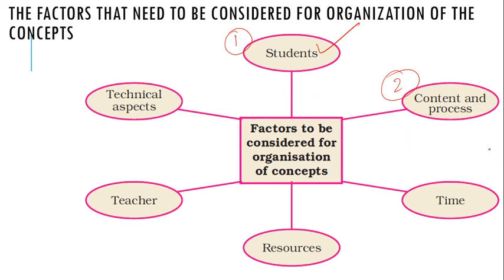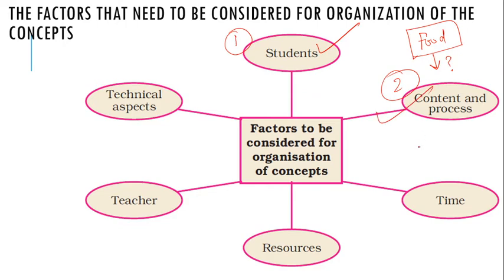The second factor is content and process consideration. This means that, for example, if you are going to teach about human food in a middle school standard, you need to decide your process: whether you will teach all variants of food in a single day, or over different days, or divide them on the basis of minerals, vitamins, carbohydrates, and fats. Basically, content and process consideration means what steps you are using to deliver your content, and that is the most important consideration after the student aspect.